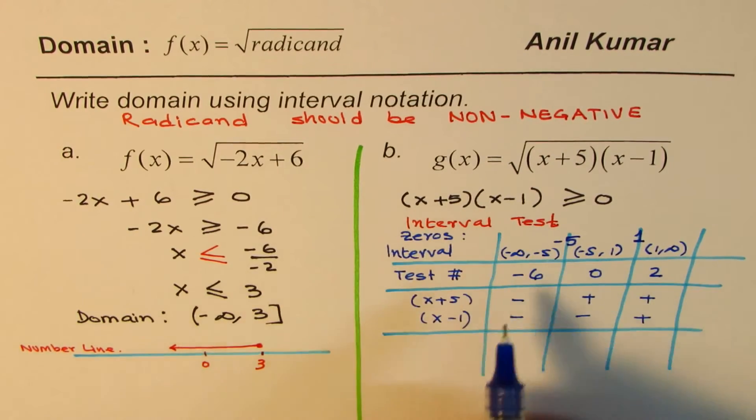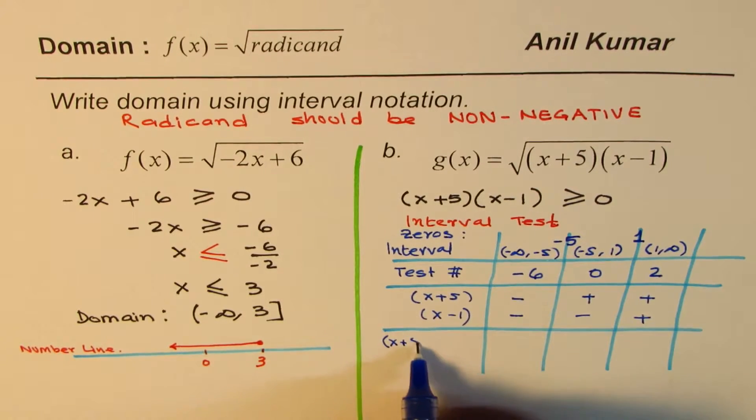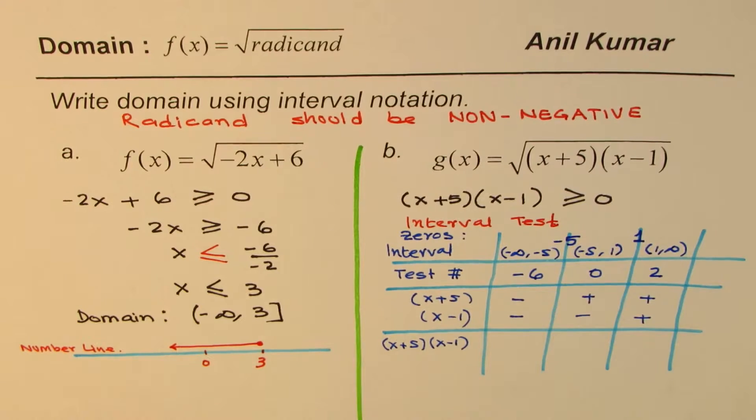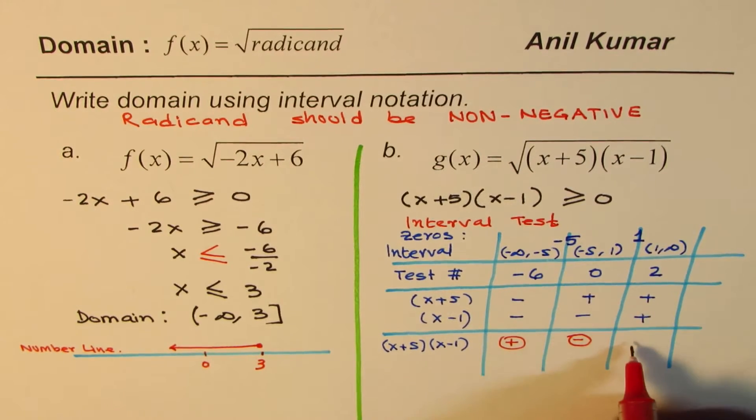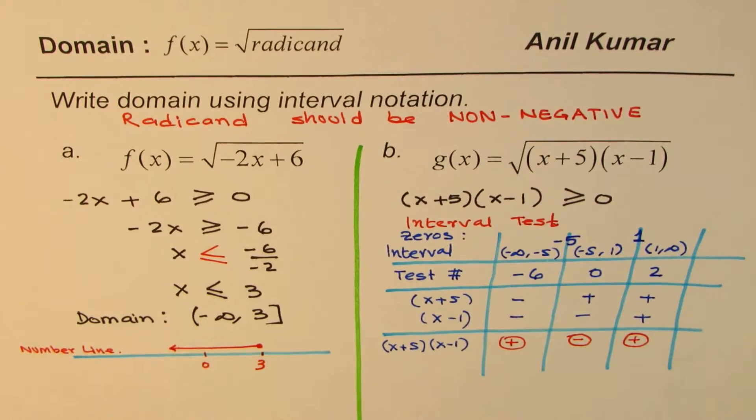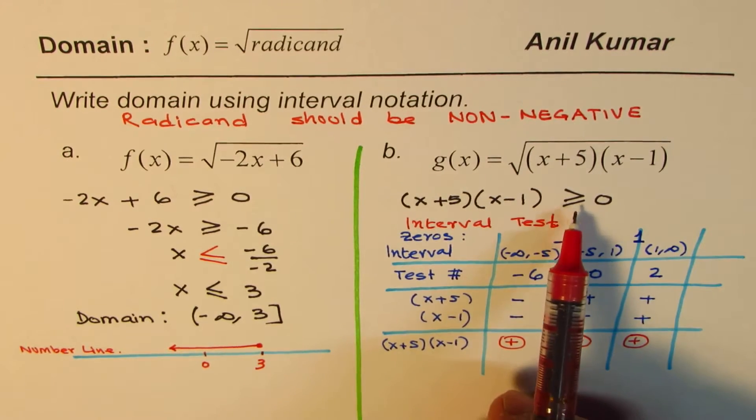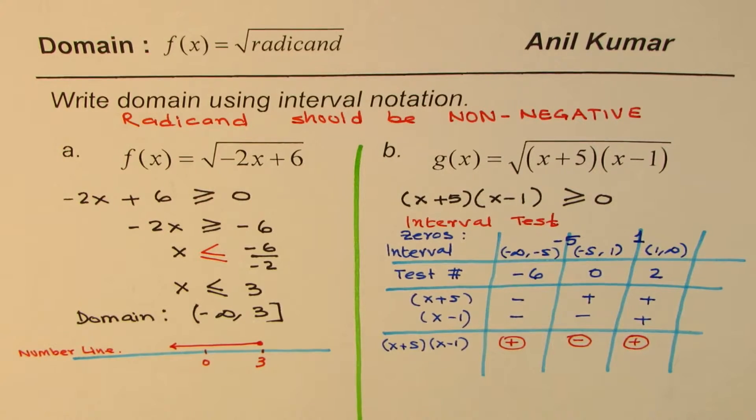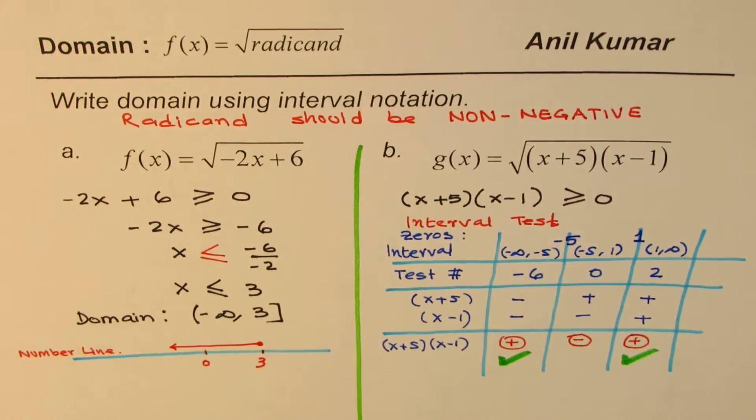Now what we are testing is the product of these two. We want to test what is (x + 5) times (x - 1). When you multiply two negatives you get a positive. When you multiply a negative and positive you get negative. Two positives result in positive. We are looking for something which is non-negative, so these two intervals are the solution for us.